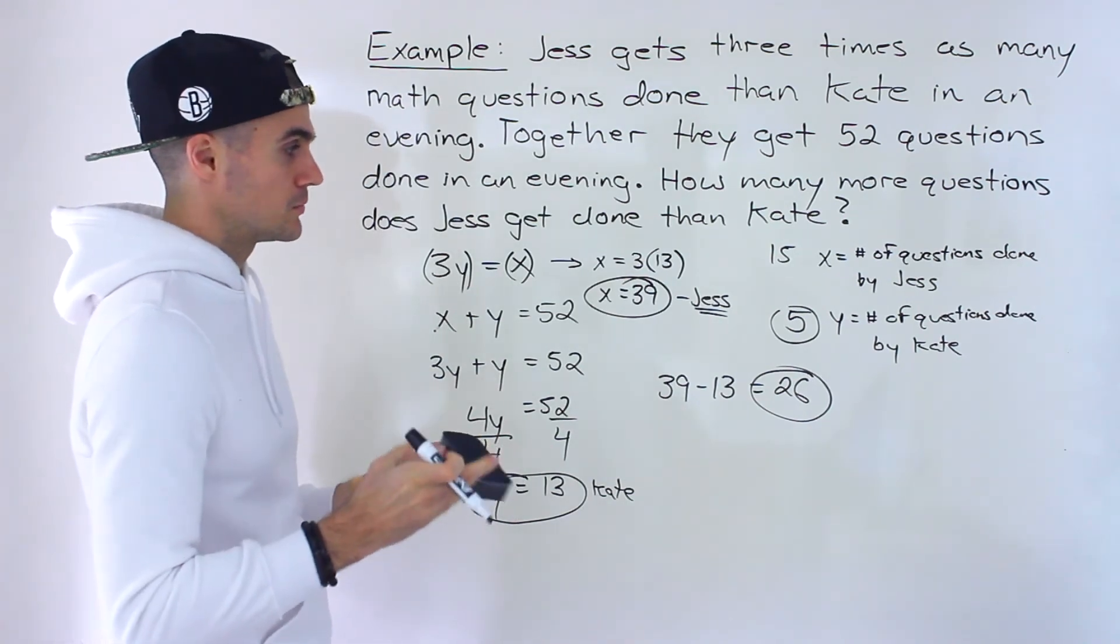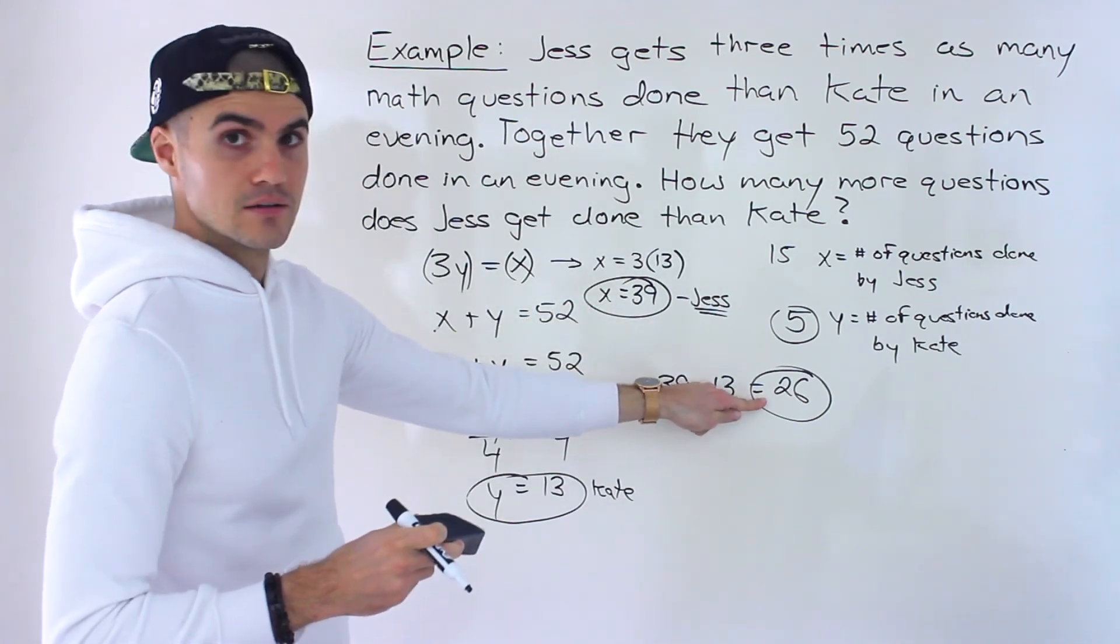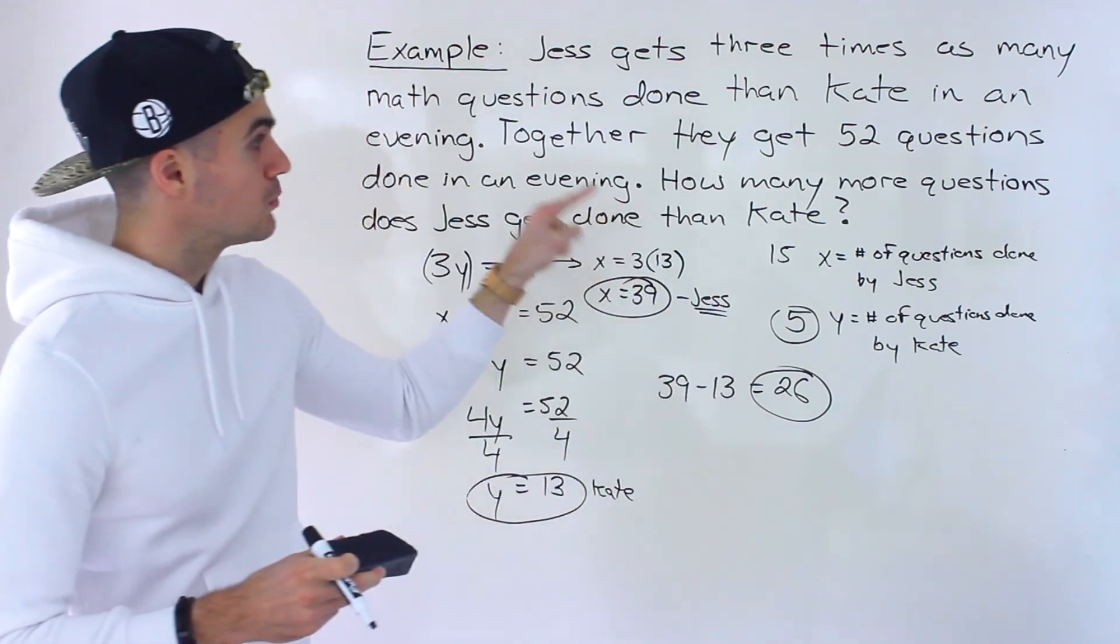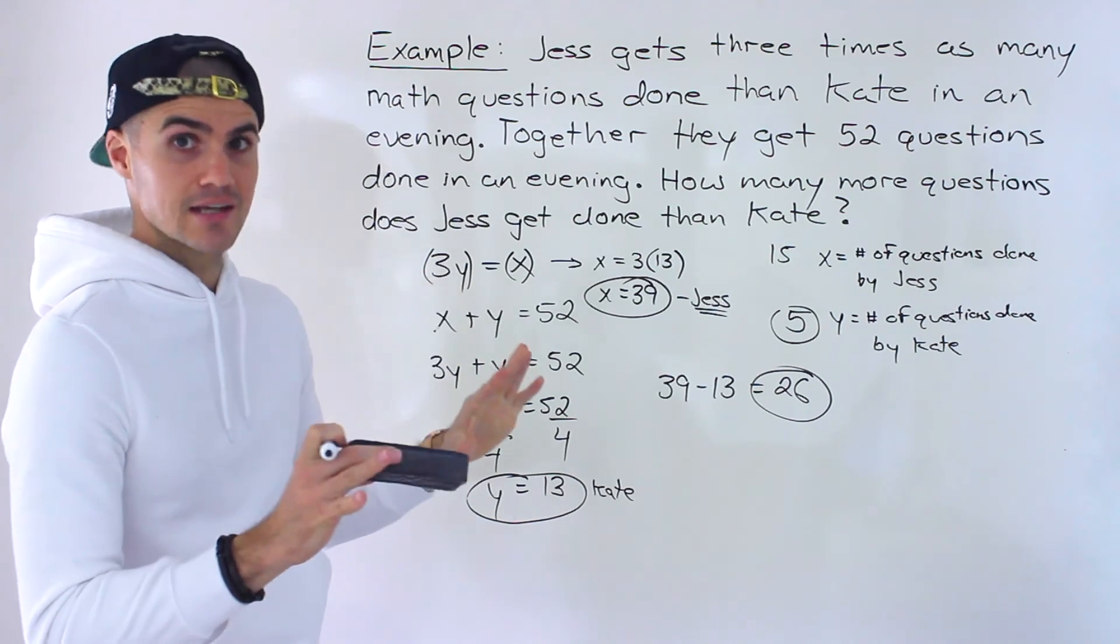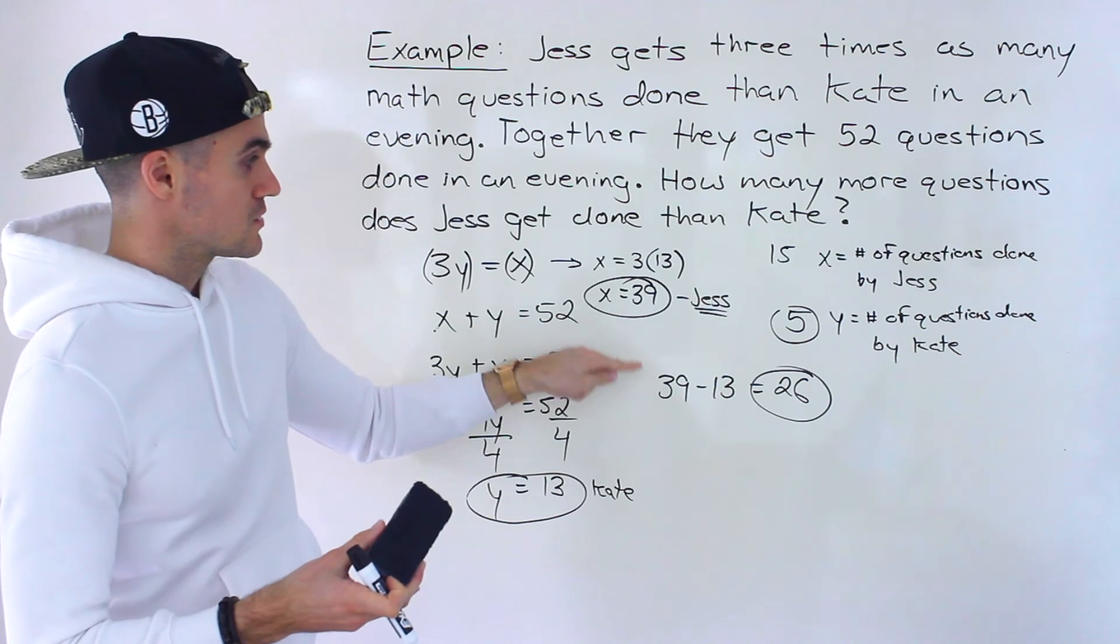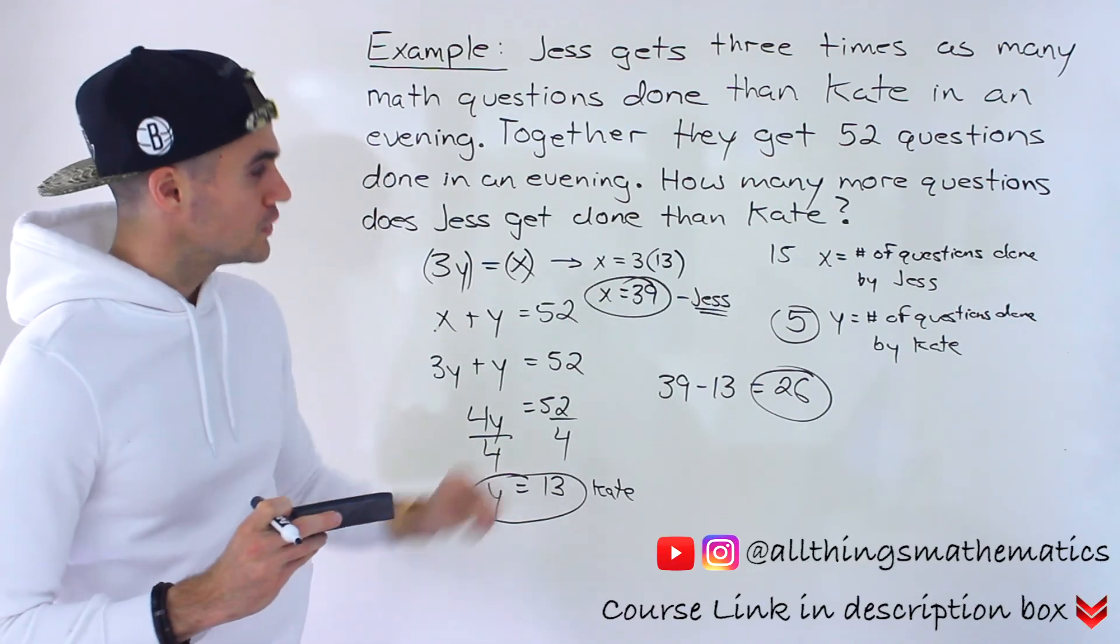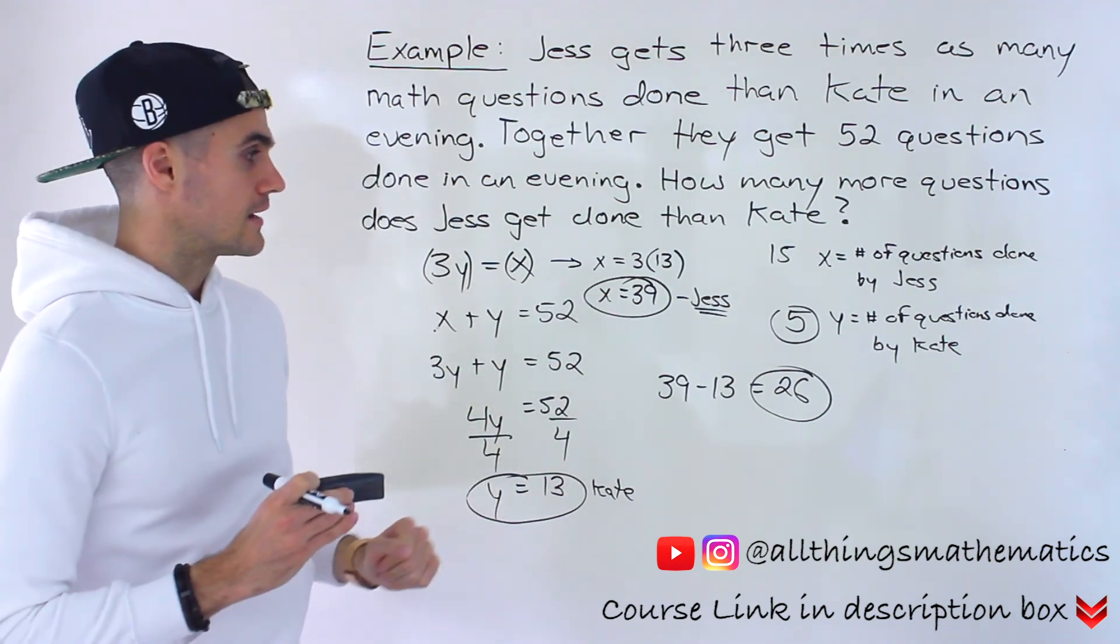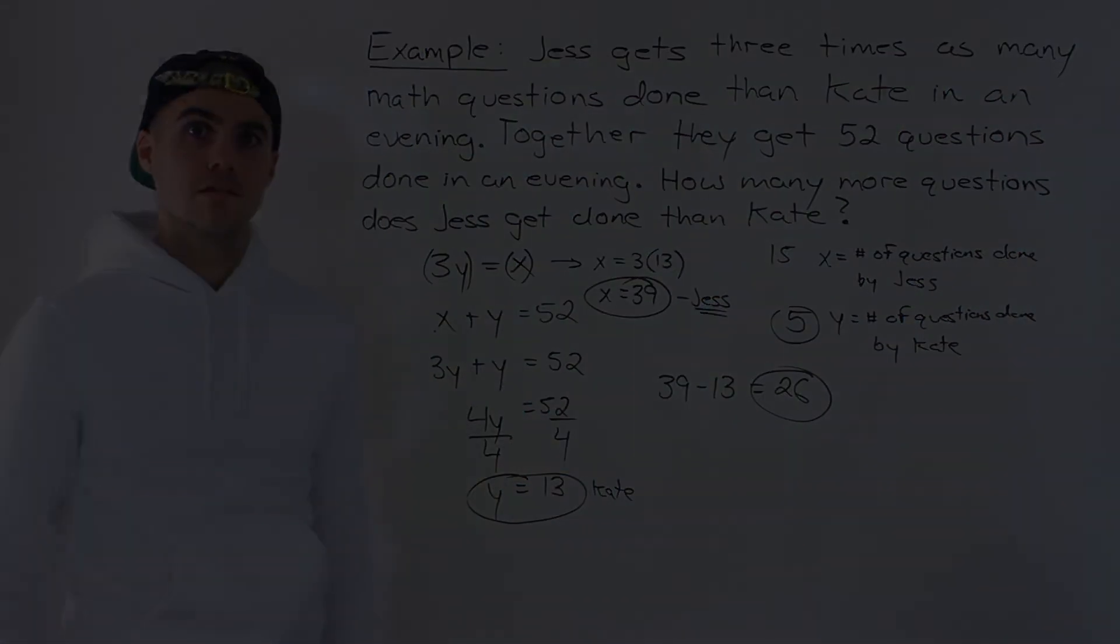So you got to be careful with a question like this. Maybe on a multiple choice test, you might see this and this, right? But they're asking for this answer right here. How many more questions does Jess get done than Kate? They're not asking how many questions does Jess get done. If they were asking that, it would just be 39. So you'd have to take the difference between those. So make sure you're reading these questions really carefully. Usually they're just going to ask for the number, but just wanted to throw something like that in there just so you can be really aware of things they could ask.